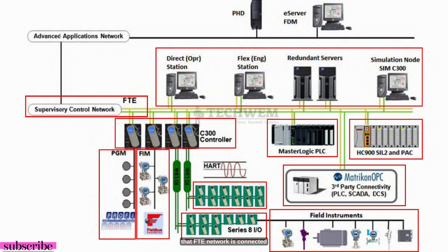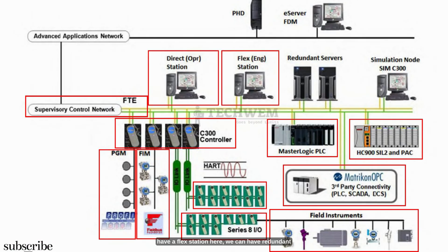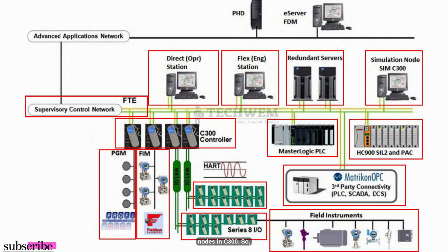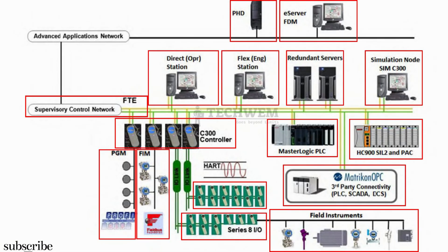That FTE network is connected to the next layer. On this layer, we can have our console station, a flex station, a redundant server, and also simulation nodes in C300. This is where you simulate your actual field process in a simulation environment — you practice and verify your process. It is especially made for control engineers and process engineers. They simulate everything here and then implement it via servers and the engineering station. On the Advanced Application Network, you connect your field device managers, which monitor field devices and their calibrations, and there is a Process Historian database which historizes your important data for future analysis.